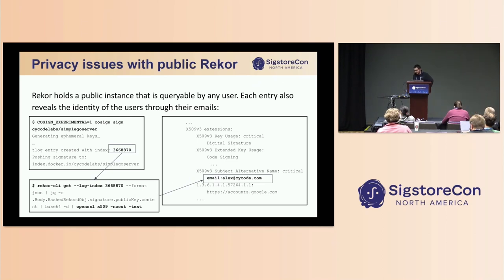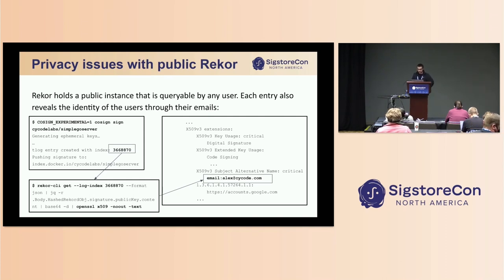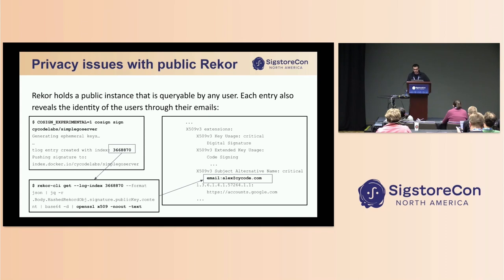From the corporate perspective, using the public instance of Rekor could be quite problematic. For example, I used cosign to sign a simple image called 'simple-go-server' and it was stored in the public instance of Rekor. We can see the index number — everyone can query that entry, extract the certificate, and get my email address, whether it's personal or corporate. This could be a significant issue for corporates, especially with git-sign which creates many more such entries. If artifacts or projects are private, exposing email addresses, machine identities, or GitHub Actions workflow identities could be a real concern.